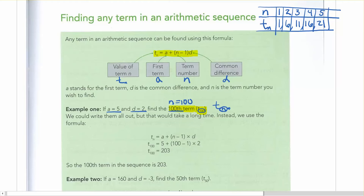So in this case, n is equal to 100, and it's the t sub n, this whole value thing that we're trying to find. So sometimes I just refer to that as t.